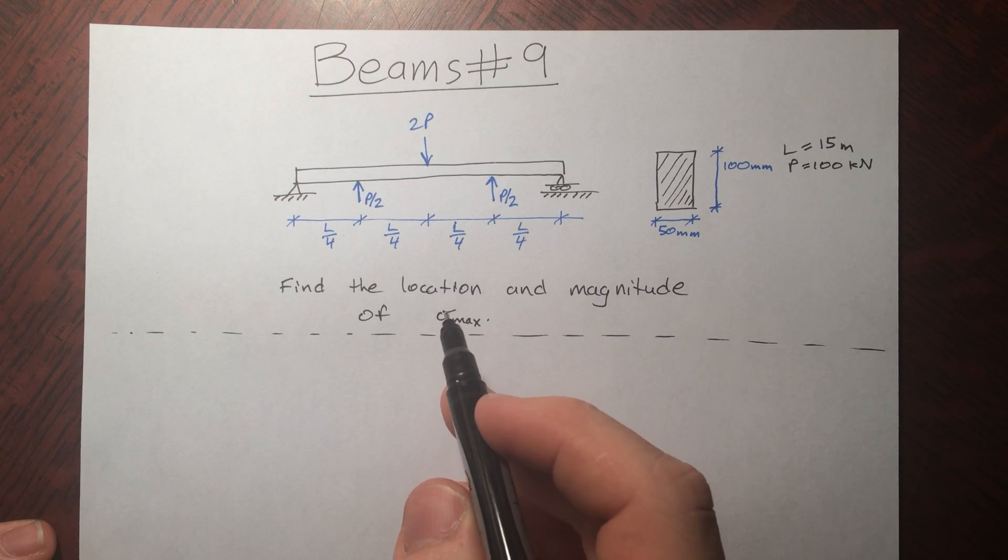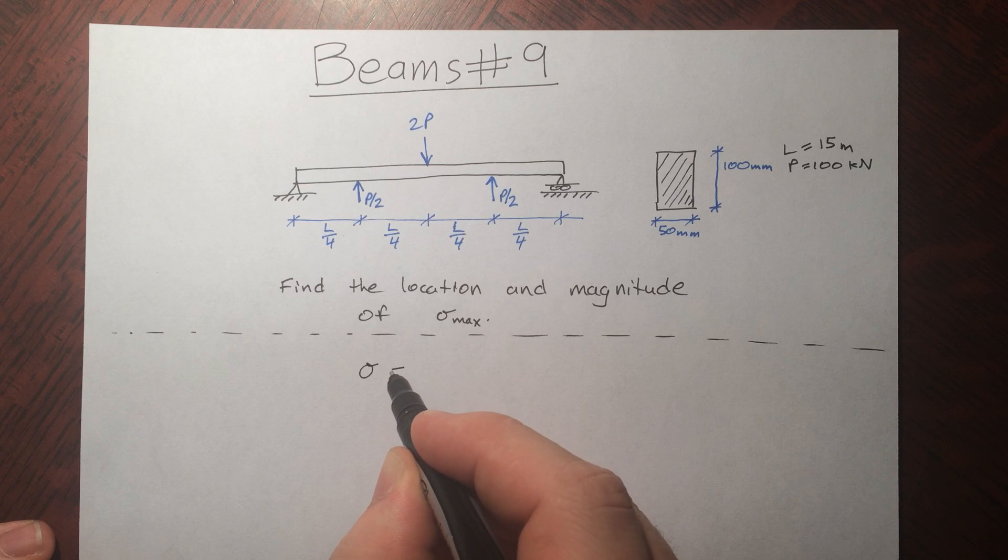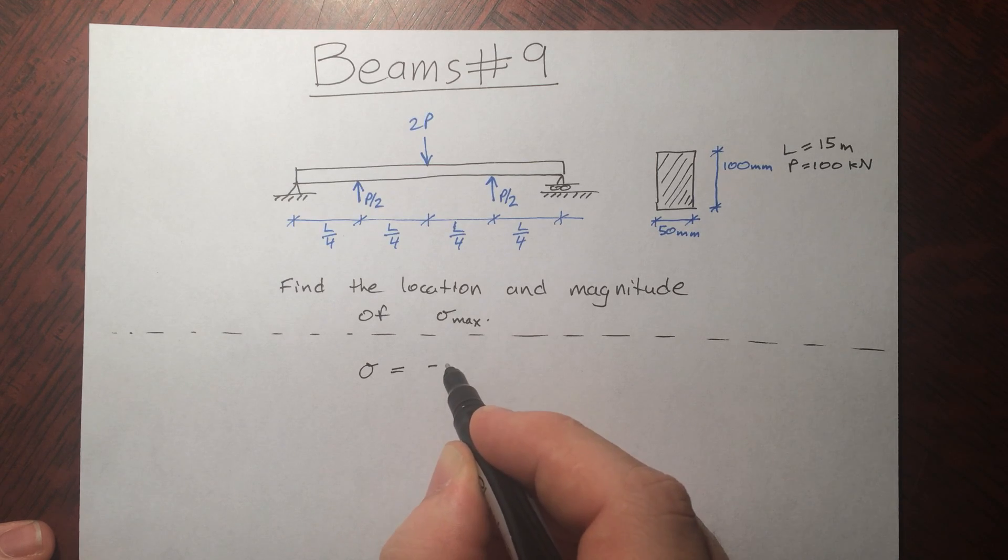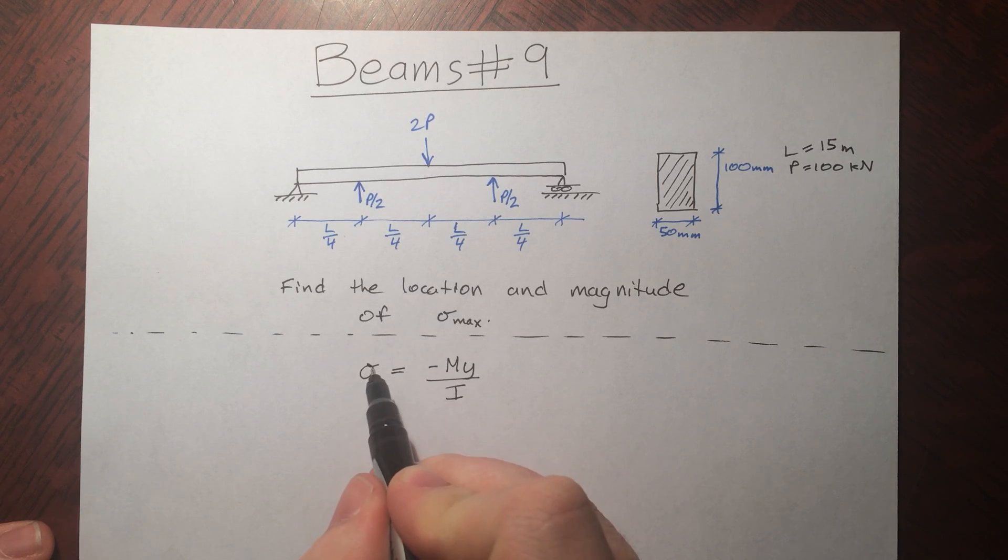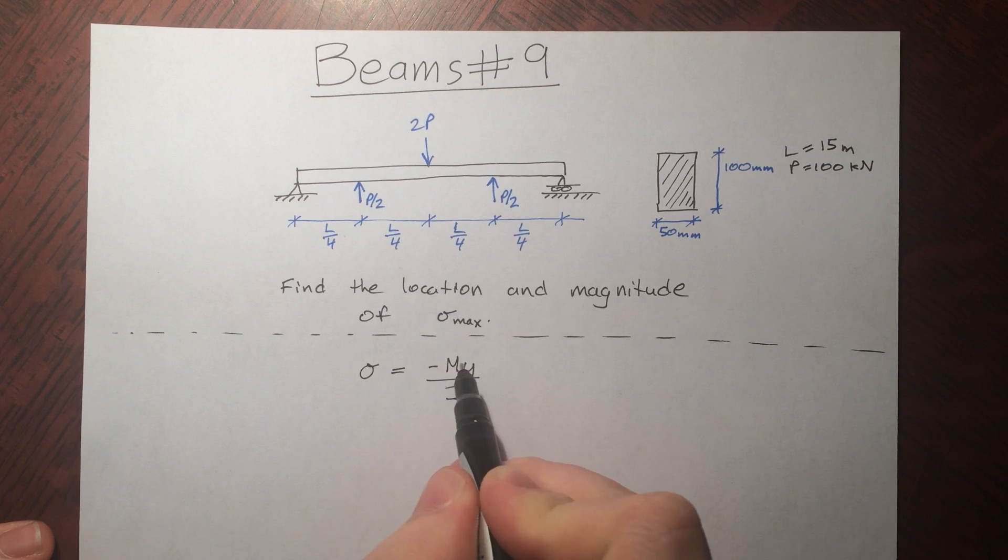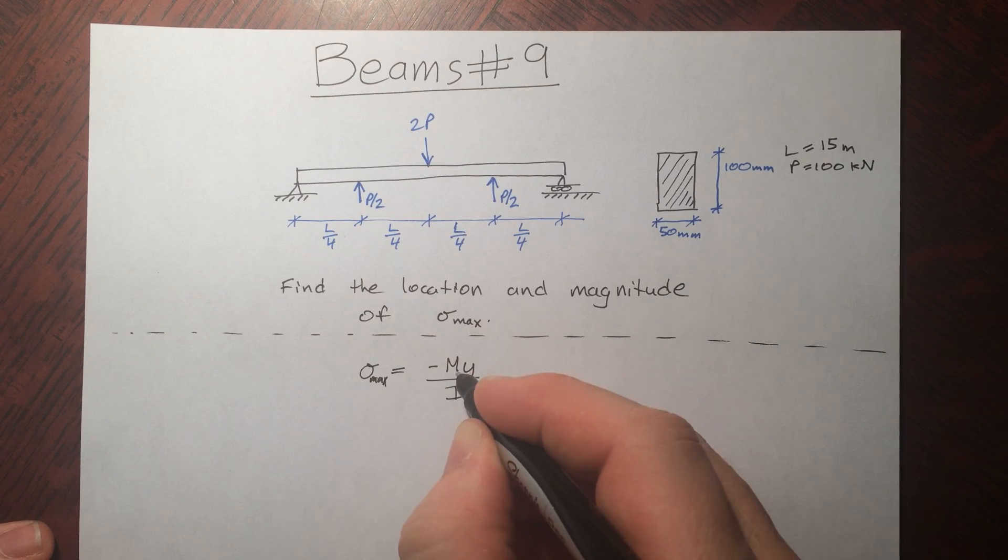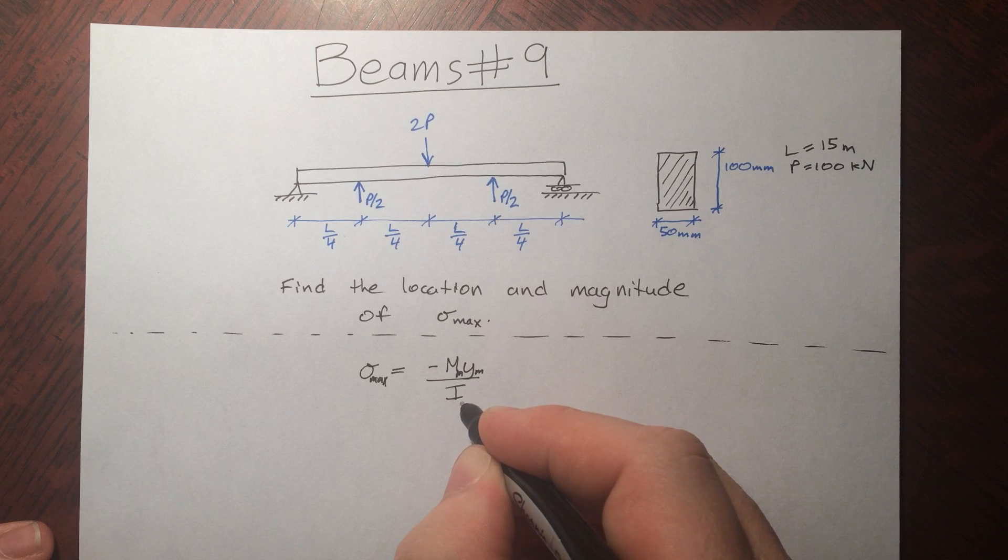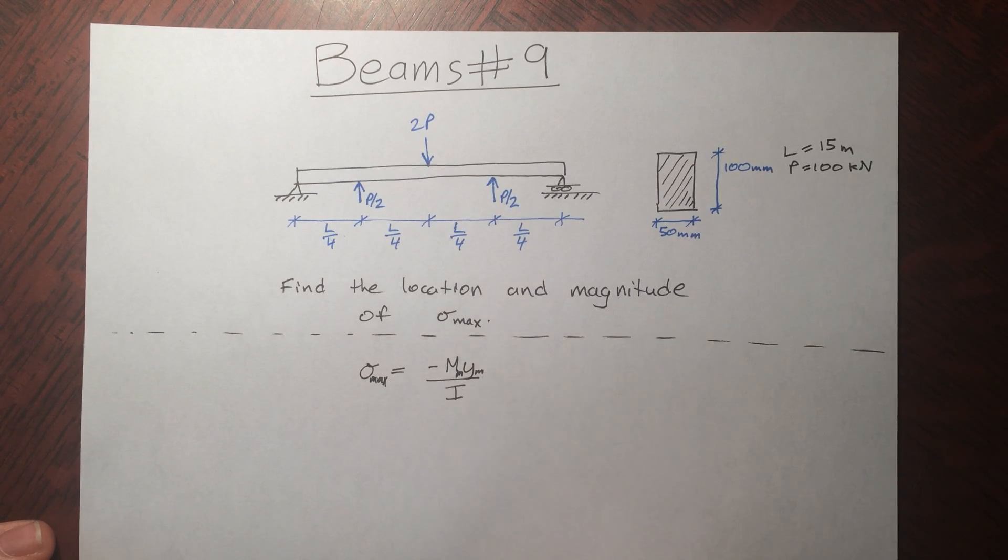So if we want to find the max bending stress, we should know what that depends on. We're going to use our formula sigma equals my over i, where m is the bending moment, y is the distance from the neutral axis, and i is the moment of inertia. All we need to do now is maximize this. So we're going to find sigma max where we have m max, y max, and moment of inertia is constant. Let's go about and find m max and y max.